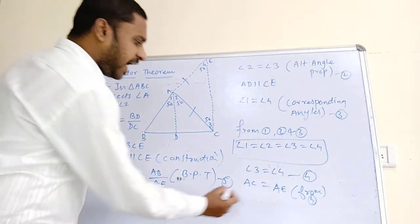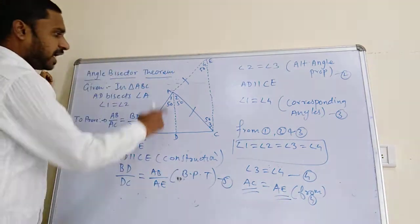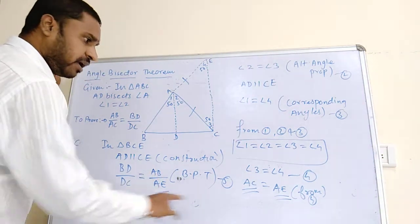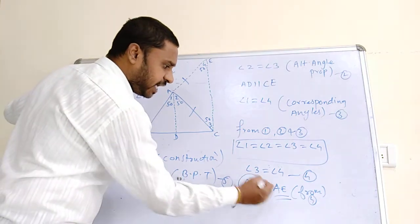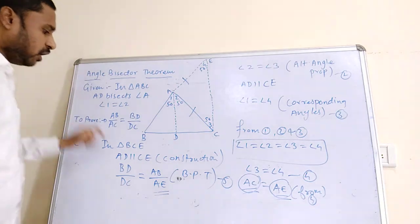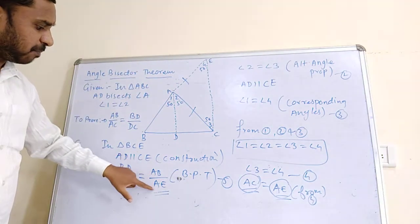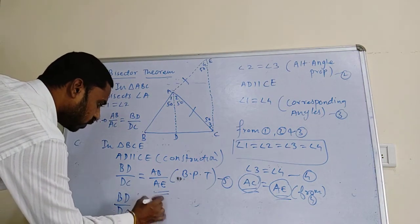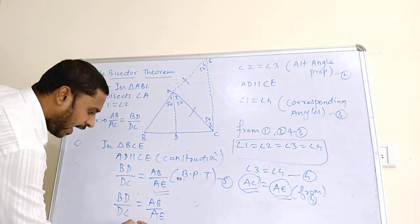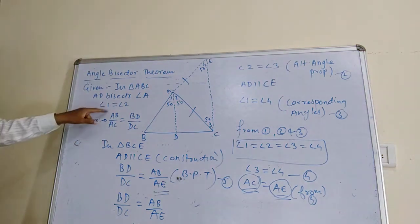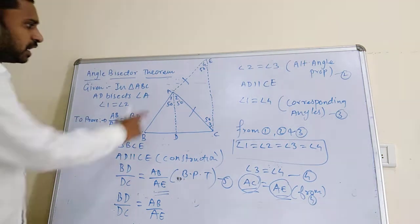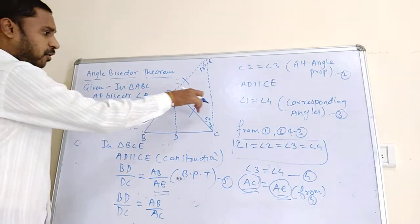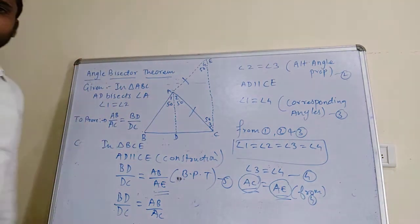Now, from Equation 4, we know that AC is equal to AE. So in Equation 5, we can replace AE with AC. Therefore: BD upon DC is equal to AB upon AC. This is exactly what we had to prove — AB upon AC is equal to BD upon DC. Hence proved.